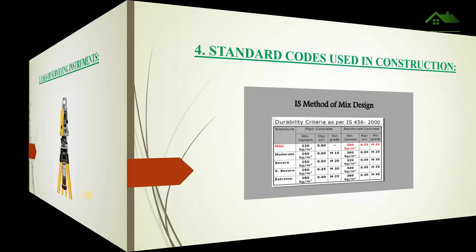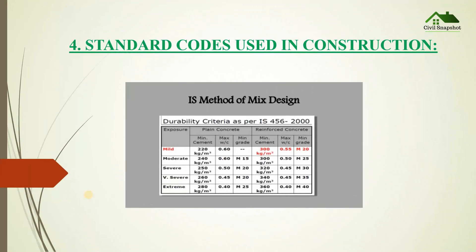Fourth one is standard codes used in construction. Every country has their standard safety specifications for construction-related work, for example IS code. All new construction should be done by following all the rules and procedures mentioned in the standard codes. Otherwise, chances of failure of a structure will always be high.